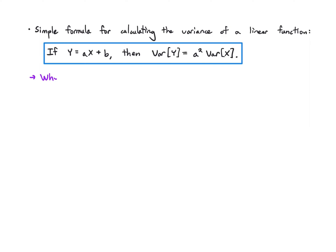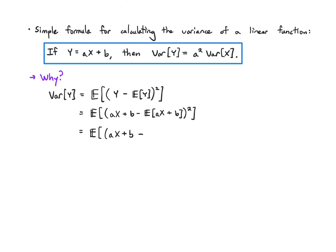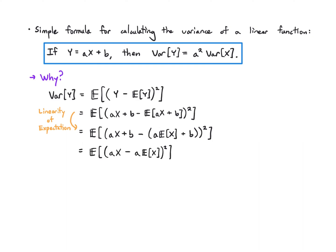Let's verify this formula. The variance of y is the expected value of y minus its mean, squared. Plugging in y equals ax plus b, and applying linearity of expectation, we get e of ax plus b equals a times e of x plus b. The b's cancel out, and we can pull out a squared, leaving something that looks exactly like the variance of x. So the variance of y is a squared times the variance of x.